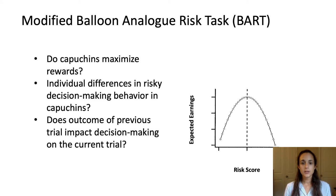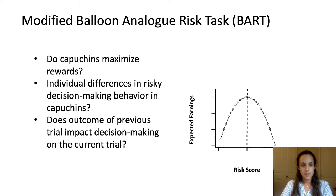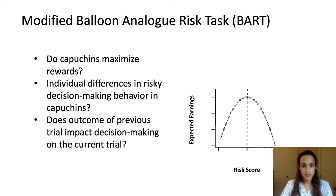We created a modified version of this task to answer the following questions. Do capuchins maximize rewards? We know that humans tend to under-maximize, so we were curious whether capuchins would do the same. Will our modified task capture individual differences in risky decision-making behavior in capuchin monkeys? And finally, we were curious whether the outcome of previous trials impacts decision-making on the current trial, because the BART task is set up to make that assessment.